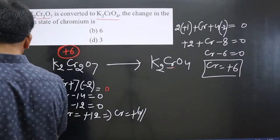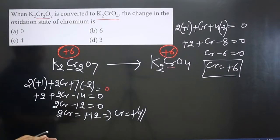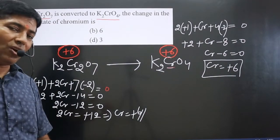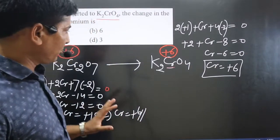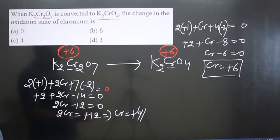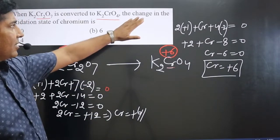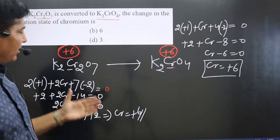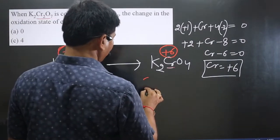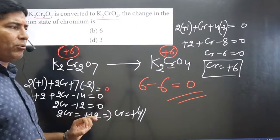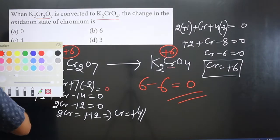This gives Cr = +6 — very interesting! In K₂CrO₄ also, chromium is in the +6 oxidation state. Since there is no change in oxidation number, there is neither oxidation nor reduction taking place in this reaction. The difference is 6 − 6 = 0, so the change in oxidation number of chromium is zero.